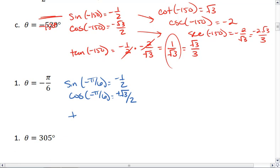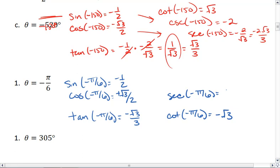This means tangent, the negatives don't cancel because we have a negative and a positive, so we actually get negative √3 over 3. For cotangent, we get negative √3. Secant is a positive 2√3 over 3, and cosecant is still just negative 2.